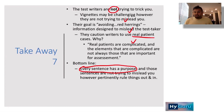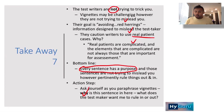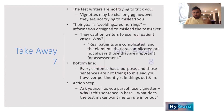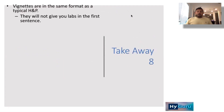Every sentence in a vignette has a purpose and is not trying to mislead you. However, there are pertinent findings to rule in and rule out. When paraphrasing, ask yourself: why is this sentence in the vignette, and what does the test maker want me to rule in or rule out?